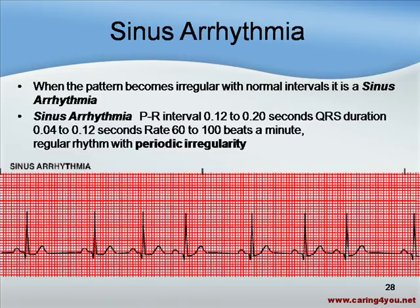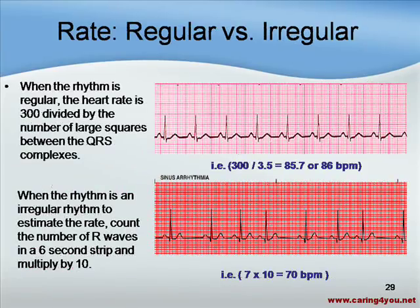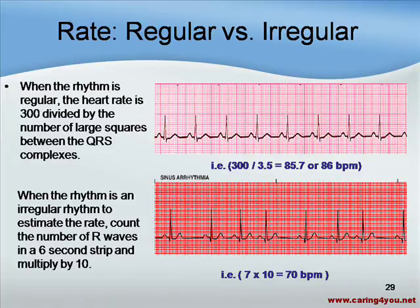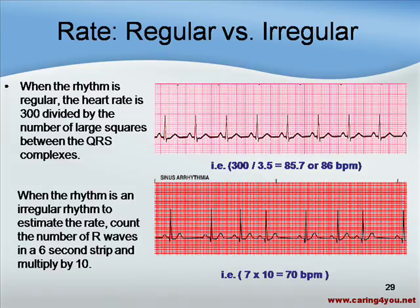When talking about arrhythmia, it becomes very important to remember regular versus irregular. When the rhythm is regular, the heart rate is 300 divided by the large number of squares between the QRS complexes. For example, in this EKG strip you would take 300 divided by 3.5, giving you 85.7, or 86 beats per minute. These are just estimates; if you need to be precise, you'll have a tool to use.